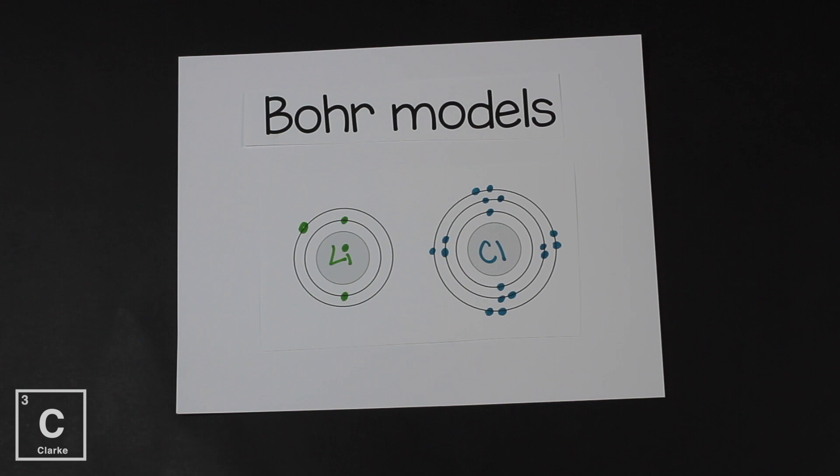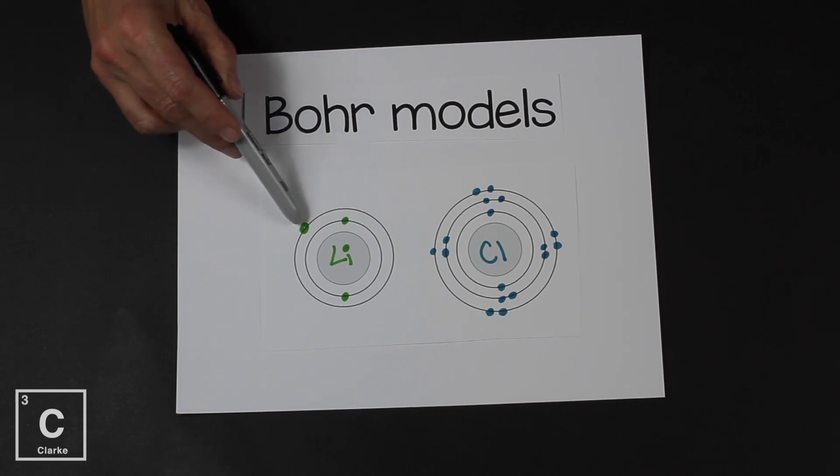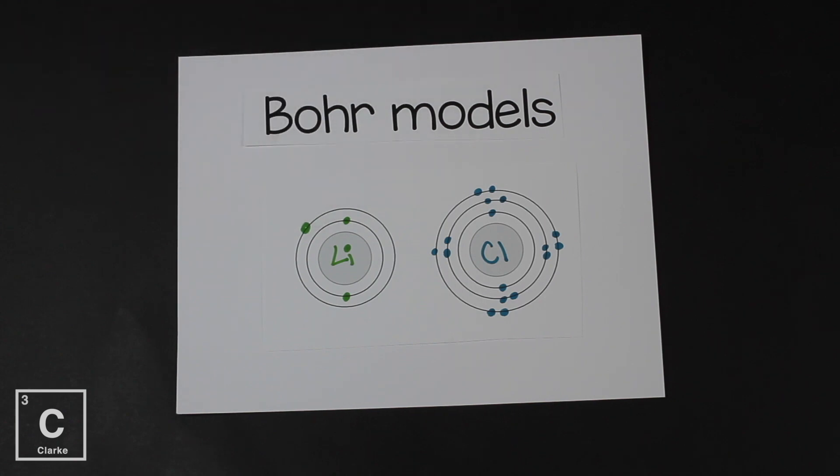First let's look at the Bohr models of lithium and chlorine. Lithium is number three on the periodic table so it has three electrons but it's in group one so it has one valence electron. Remember, valence electrons are those outermost energy level electrons. Chlorine is number 17 so it has 17 electrons but if we look at that third energy level there are only seven electrons. So if we remember the octet rule,